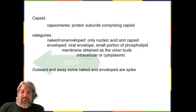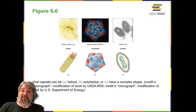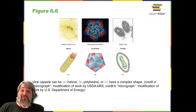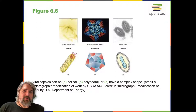Viruses vary in the shape of their capsids, which can be helical, polyhedral, or complex. A helical capsid forms the shape of the tobacco mosaic virus and Ebola virus; the capsid is cylindrical or rod-shaped, with the genome fitting just inside the length of the capsid. Polyhedral capsids form the shapes of poliovirus and rhinovirus, consisting of a nucleic acid surrounded by an icosahedron—a three-dimensional, 20-sided structure with 12 vertices. These capsids somewhat resemble a soccer ball, or more so a 20-sided die.